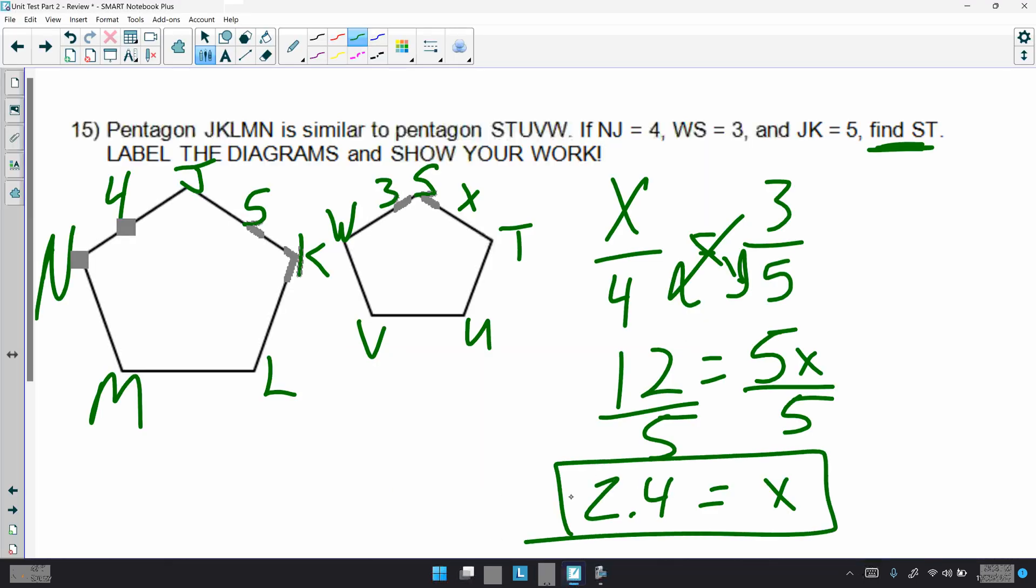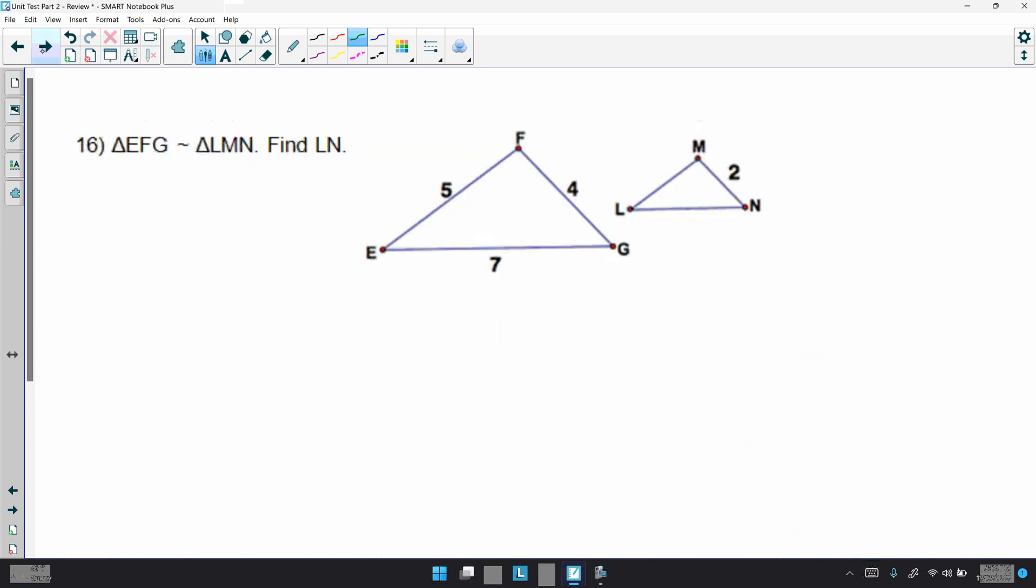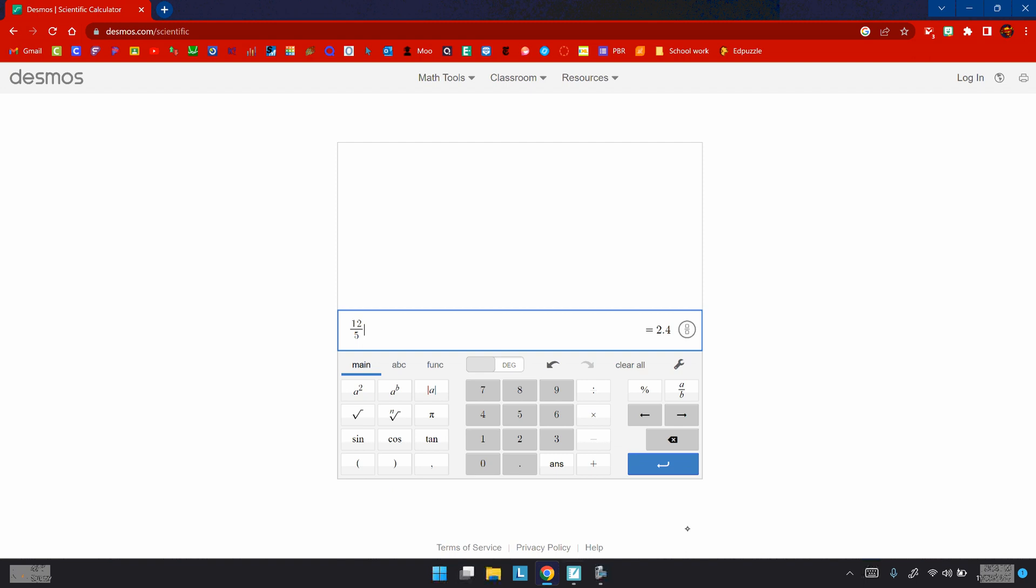16, triangle EFG is similar to triangle LNM. Find LN. I'll put a little x there. Same thing. I know EG and LN are proportional to each other, so I'm going to do x over 7. Again, should be equal to MN and FG, so 2 over 4. Again, cross-multiply. 2 times 7 is 14. 4 times x is 4x. Divide by 4. Let's see what x divided by 4 is. Get your calculator. Not x divided by 4, 14. 14 divided by 4. 3.5.